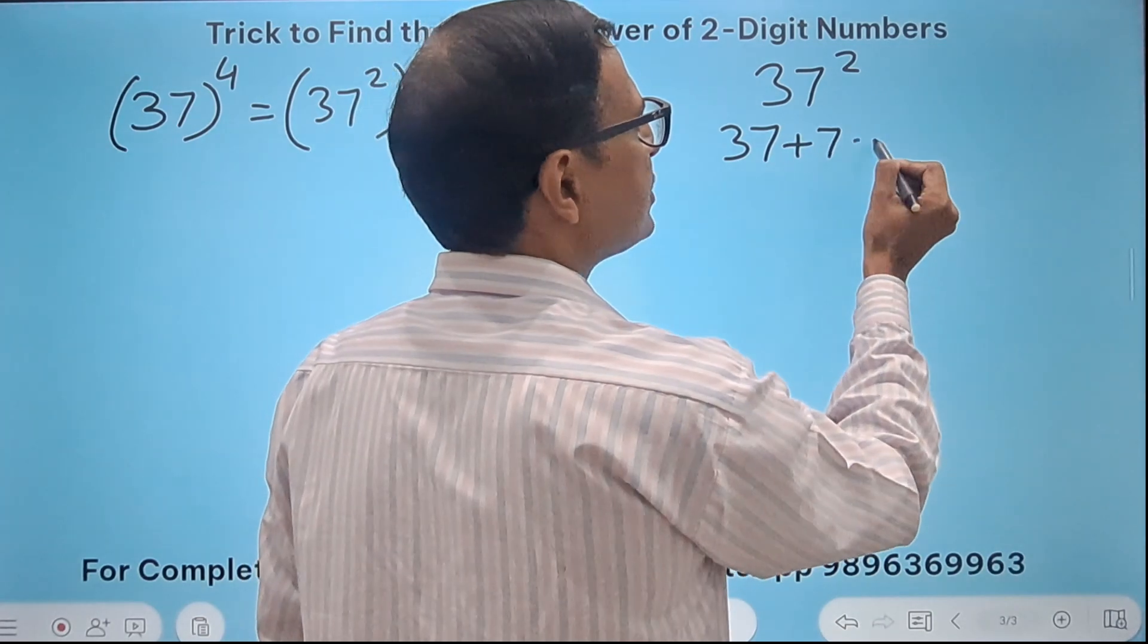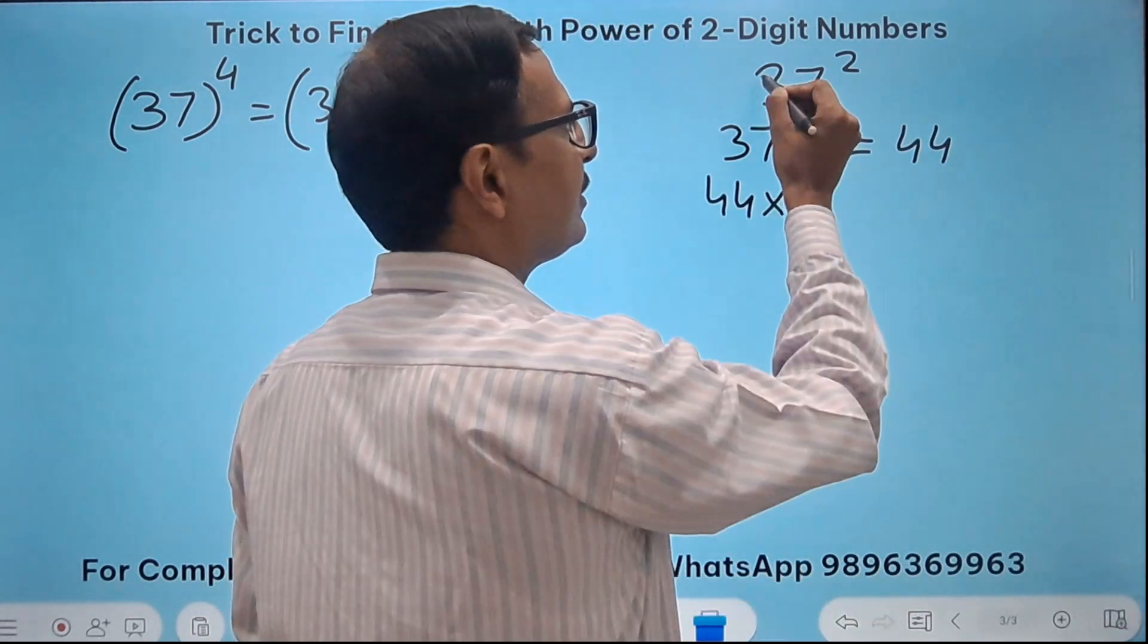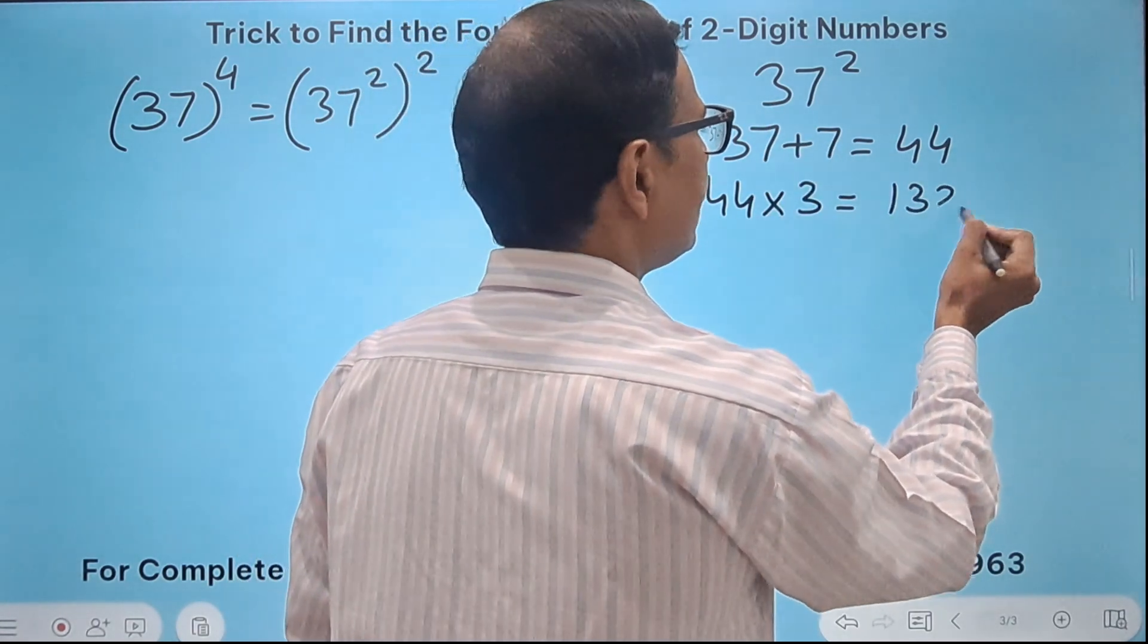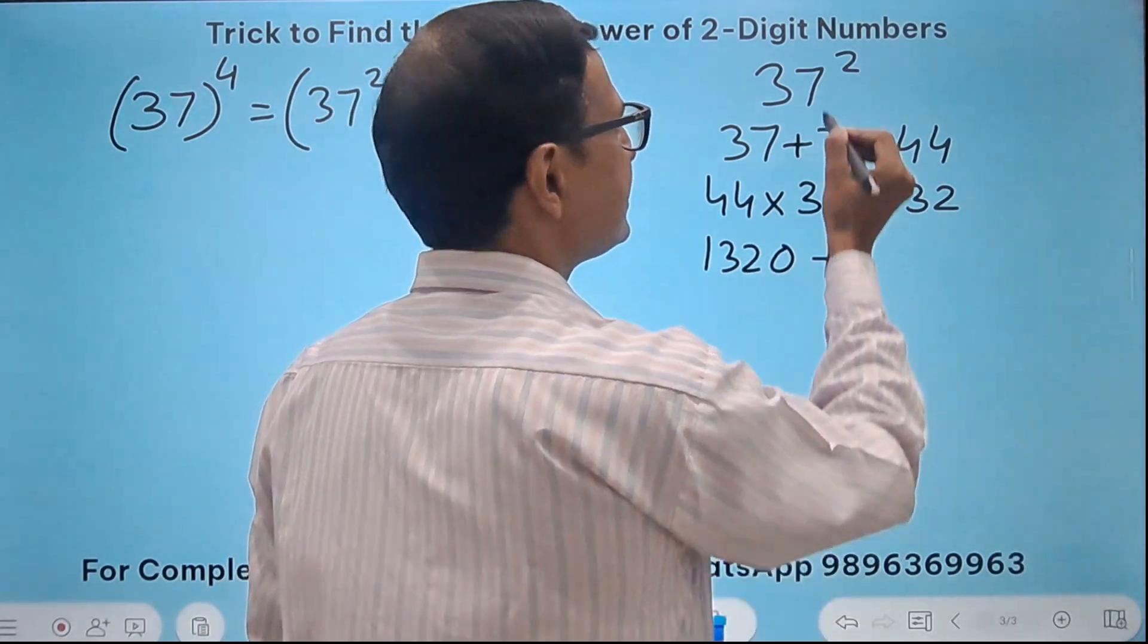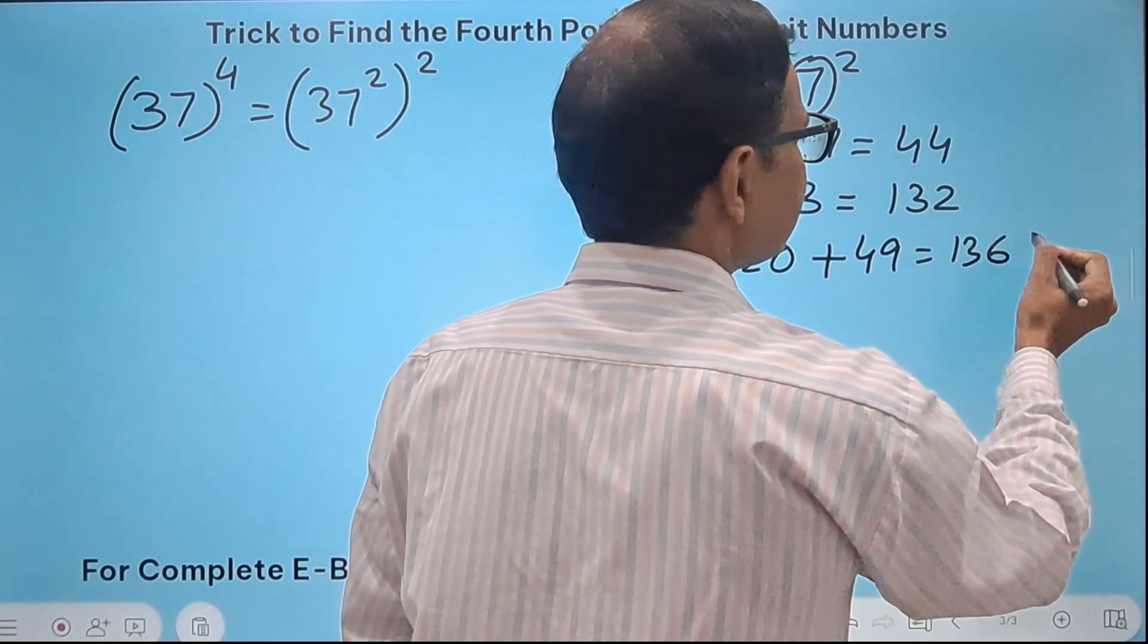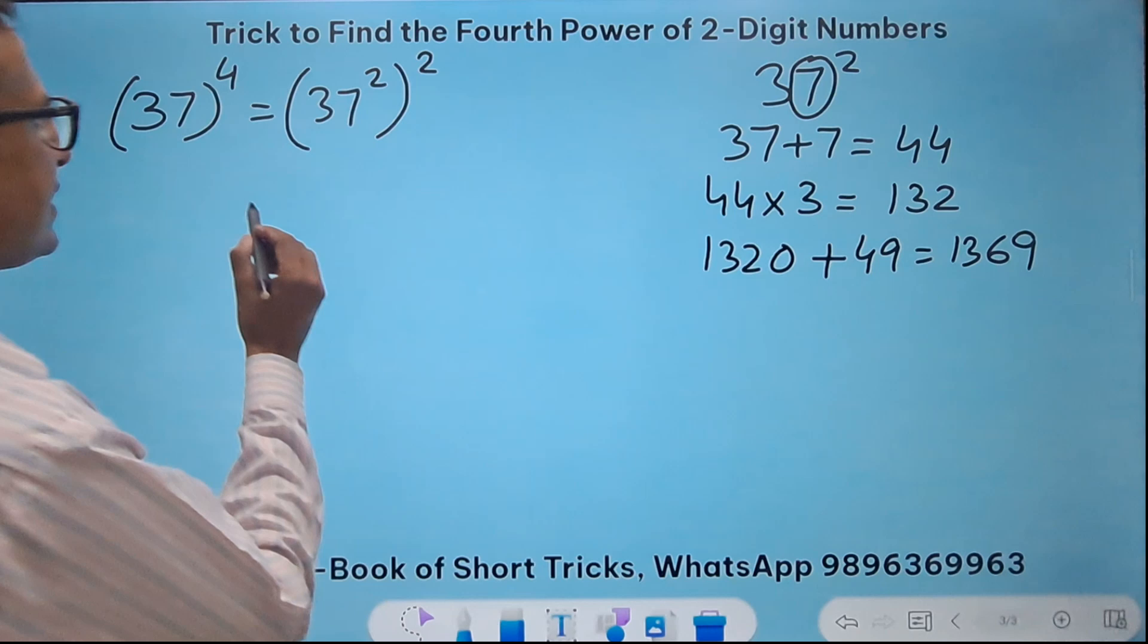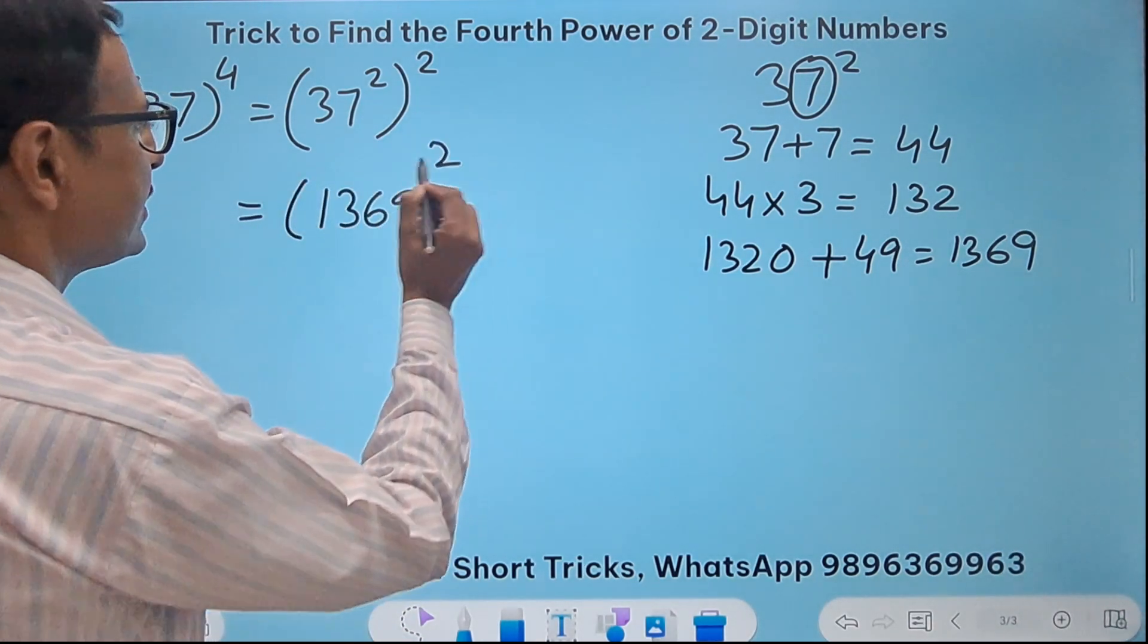So the first thing is getting 37 square. So 37 plus the unit digit 7 is 44. 44 times the 10th digit 3 is 132 and then 132 followed by a 0 plus 7 square which is 49 gives me 1369. See how quickly you can find the square of a two-digit number. So 1369.